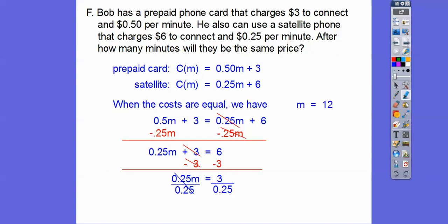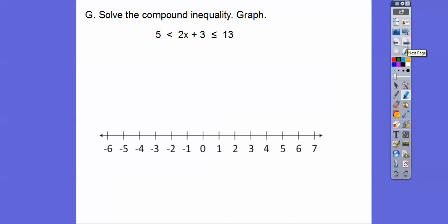So let's answer the question, you guys. After how many minutes will they be the same price? After 12 minutes, and they're going to be $9 a piece. So you can just plug in 12 right here. 0.5 times 12 is 6. 6 plus 3 is 9. I get 9 on this one. 0.25 times 12 is a fourth of 12 is 3. So 3 plus 6 is also 9 right there.